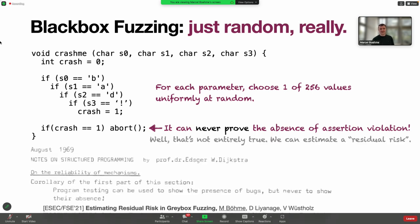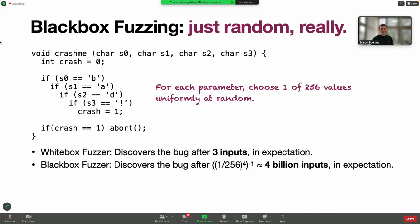More recently we've looked into giving testing some kind of statistical guarantees, computing what is called residual risk after a certain amount of testing. But the fact remains, black box fuzzing is not most effective. It cannot prove the absence of errors.